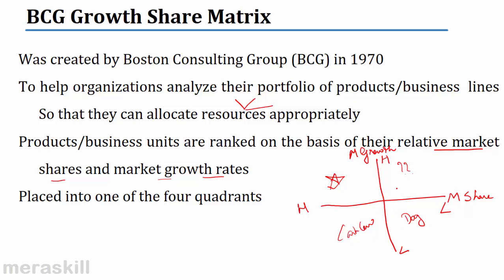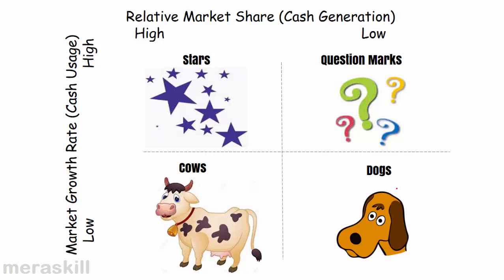Let us now look at a much neater presentation of the Boston Growth Share Matrix. The horizontal axis represents the market share, which also represents cash generation — the higher the market share, the higher the cash generation; the lower the market share, the lower the cash generation. The vertical axis represents the relative growth rate. The higher the rate of growth, the higher the potential for growth, which means it will require more investments and therefore the requirement of cash flow is higher.